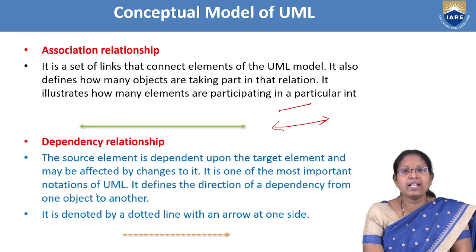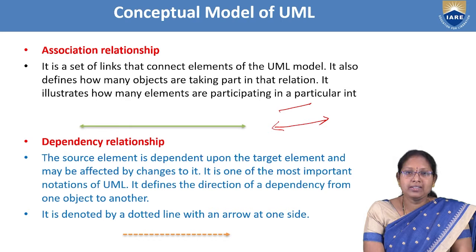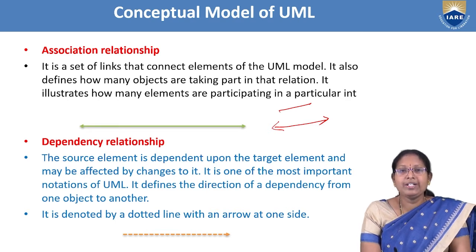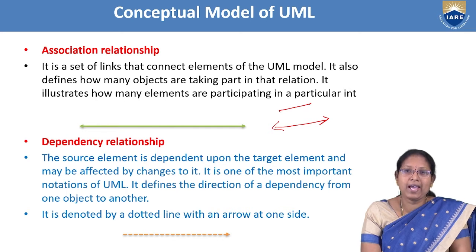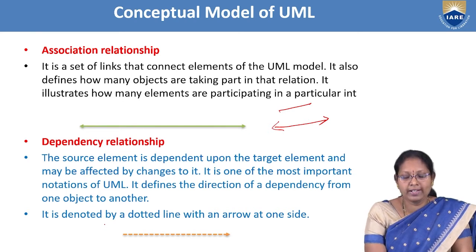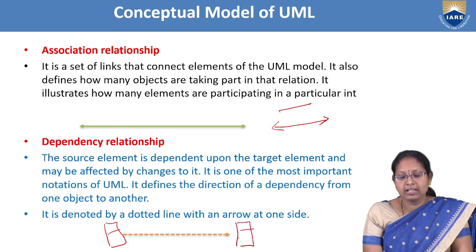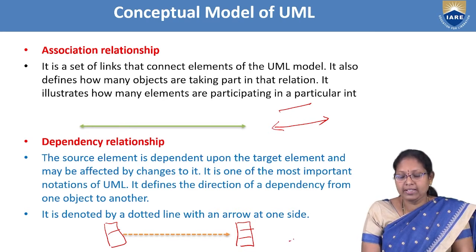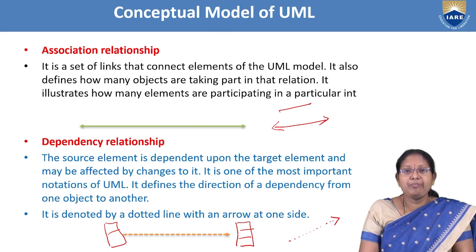The second is dependency relationship, also called a using relationship. It is used wherever one class's objects depend on another class's objects. The dependency relationship has a source class and a target class. It is represented by a dotted line with an arrow.